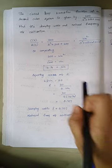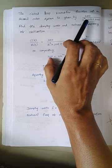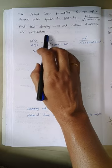Hello viewers, the problem is the closed loop transfer function of a second order system is given by this expression. Find the damping ratio and the natural frequency of oscillation.